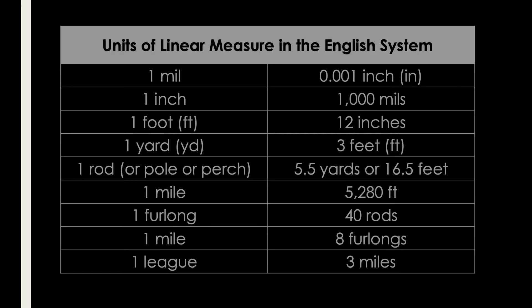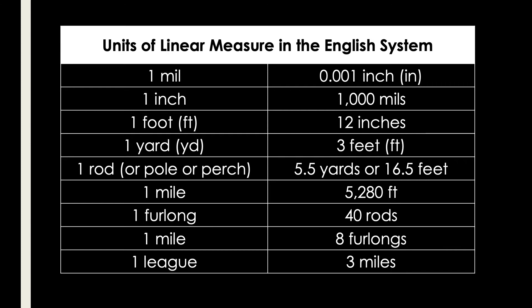Here's another table showing units of linear measure in the English system. In one mil, we have 0.001 inch. In one inch, we have 1,000 mils. In one foot, we have 12 inches. In one yard, we have 3 feet. In one rod, pole, or perch, we have 5.5 yards or 16.5 feet. In one mile, we have 5,280 feet. In one furlong, we have 40 rods. One mile is equal to 8 furlongs. And in one league, we have 3 miles.